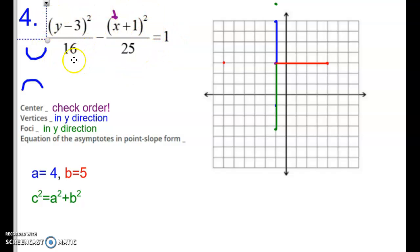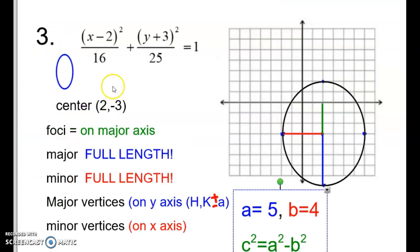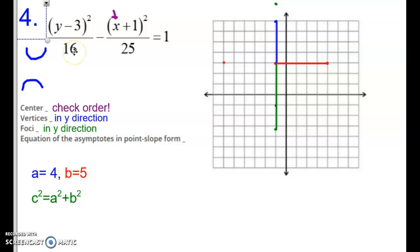Pay attention to this. I know, by looking at this, that a always comes first. Unlike the ellipse, where a is always the biggest one, in the hyperbola, a always comes first. Which means, since a is first and y is coming first, I know that this hyperbola is going to open in the y direction. And I put a little sketch here, just like I did on the ellipse, to help me out, so I know which way to go.